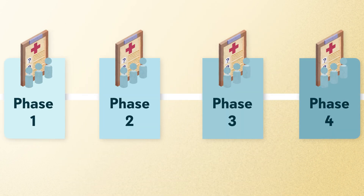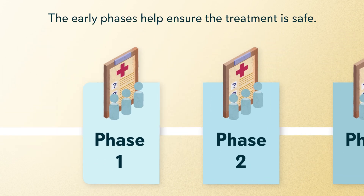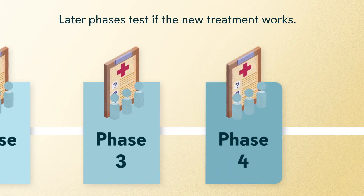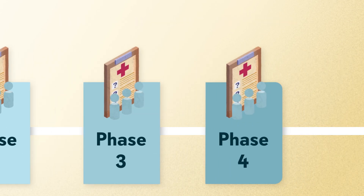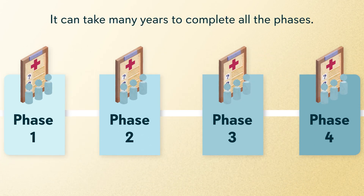Clinical trials are done in steps called phases. The early phases help ensure the treatment is safe. Later phases test if the new treatment works. It can take many years to complete all the phases.